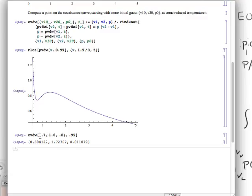So, my result for the liquid phase molar volume is 0.68. That's about right. My vapor one is 1.72. The pressure is almost the 0.8 that I guessed. So, very good.